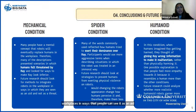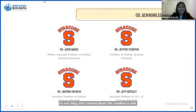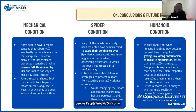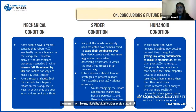For the spider condition, a lot of the scenarios reflected how people wanted to exert their dominance over Ray. People would typically use the most aggressive terms when compared to other conditions. Future research should look at strategies to prevent humans from being physically aggressive against robots and trying to destroy them.